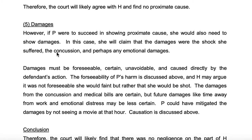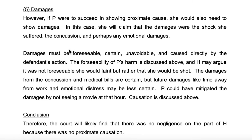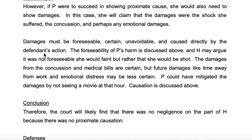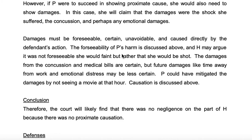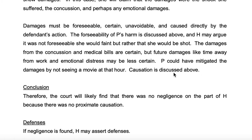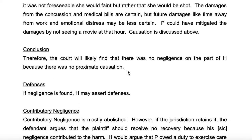Damages: if P were to succeed in showing proximate cause, she would need to show damages. In this case, she would claim that the damages were the shock she suffered, the concussion, and perhaps any emotional damages. Damages must be foreseeable, certain, unavoidable, and caused directly by the defendant's action. Conclusion: therefore, the court will likely find that there was no negligence on the part of H because there was no proximate causation — it's the but-for cause, but not the legal or proximate cause.